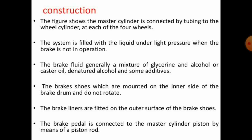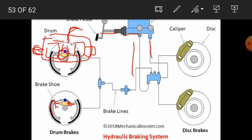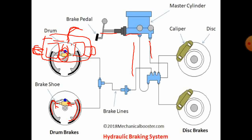The brake liners are fitted on the outer surface of the brake shoe. You can see the black lines on the shoe in the diagram — those black lines are called the brake liner.